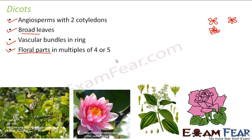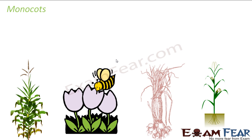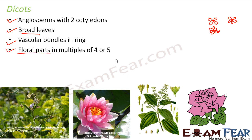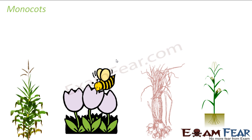By looking at the flowers you can tell whether a plant is a dicot or monocot. If the leaves are broad, it is a dicot; if the floral parts are in multiples of four or five, it is a dicot. Examples of dicots include the bean plant, water lily, cinnamon, and rose. Most plants we see around us, including vegetables, fall under the category of dicots.